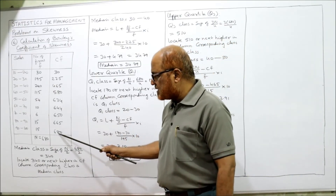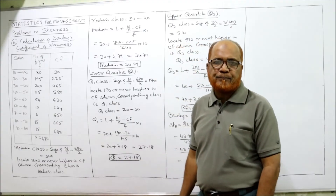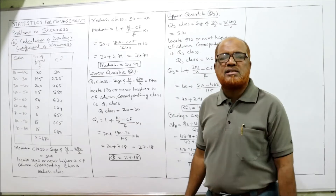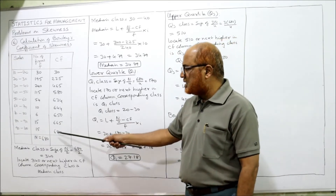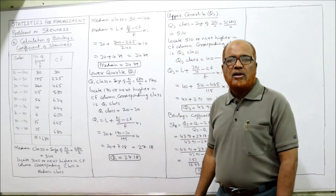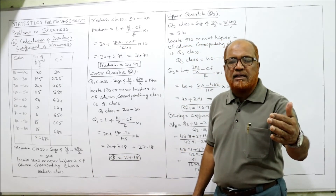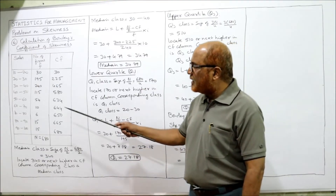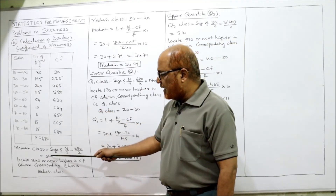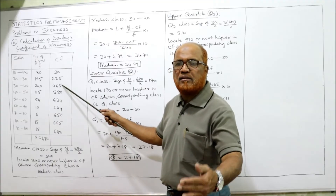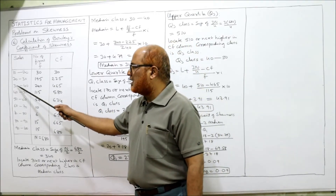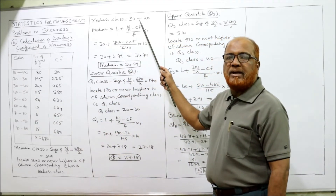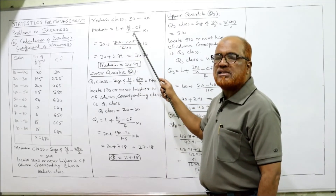The last CF = 680 = n, confirming correct calculations. For the median class, n/2 = 680/2 = 340. Locate 340 or next higher in the CF column; 465 is the next higher, corresponding to class interval 30 to 40. So the median class is 30 to 40. The median formula is: Median = L + [(n/2 − cf) / f] × i.